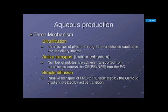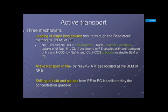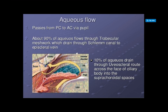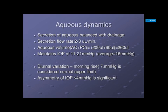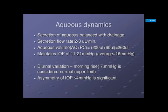Simple diffusion involves passive transport of water to the posterior chamber facilitated by the osmotic gradient created by active transport. The secretion of aqueous is balanced with drainage. Aqueous volume is approximately 260 microliters and maintains an intraocular pressure of about 11 to 21 mmHg, with an average of 16 mmHg. There can be diurnal variation with a morning rise, and asymmetry between the two eyes of 4 mm is significant.